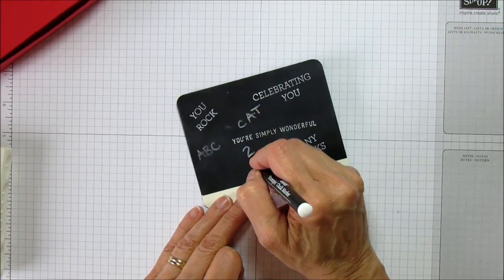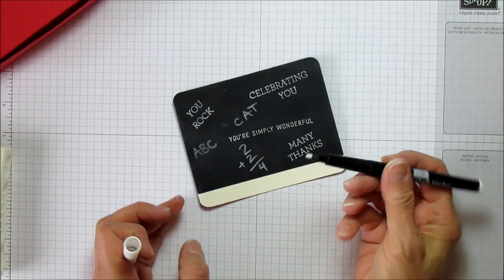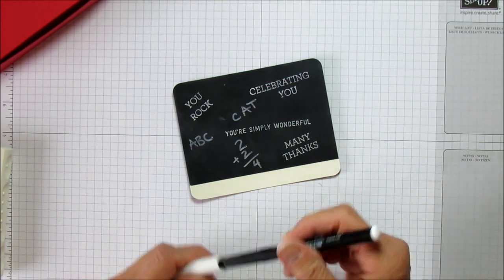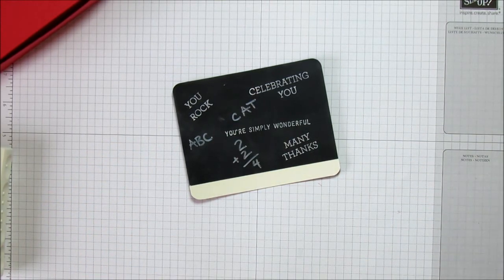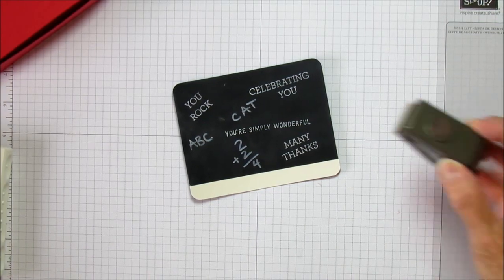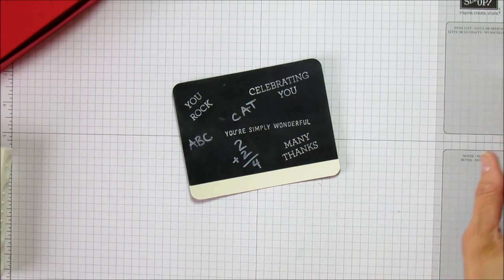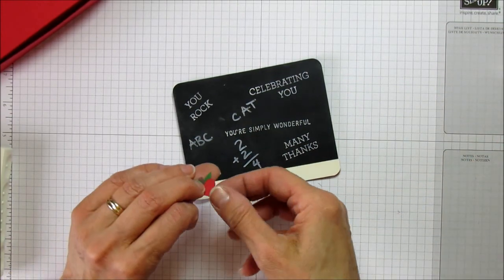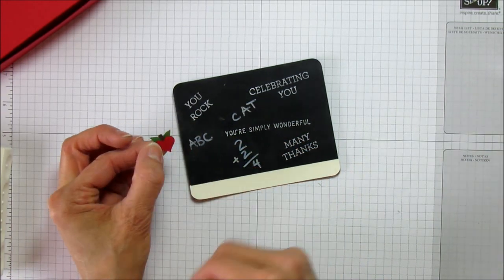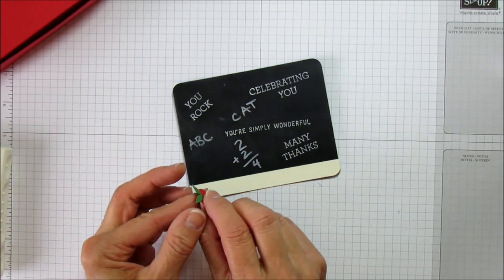Down here I just put like two plus two is four. I love this little chalk marker, you could write whatever you want. For the little apple I used our mini heart punch and I cut just a little bit of piece of brown and some garden green and made it look like a little apple.